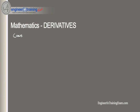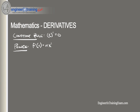The constant rule states that if f(x) equals a constant c, then f'(x) equals zero — the derivative of a constant is zero. The power rule states that if f(x) = xⁿ where n is a real number, then f'(x) = n·x^(n-1).